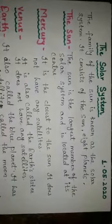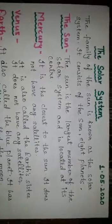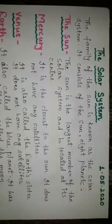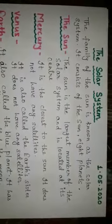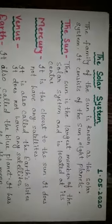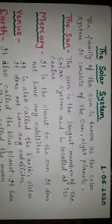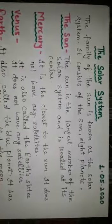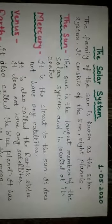Next topic: the sun. The sun is the largest member of the solar system and is located at its center. The diameter of the sun is about 109 times greater than the diameter of the earth. The sun is the main source of heat and light for all forms of life on earth. That's why ancient people always worshipped the sun as a god. The sun is at an average distance of about 15 crore km from the earth. The gravitational pull of the sun keeps all the members of the solar system together.